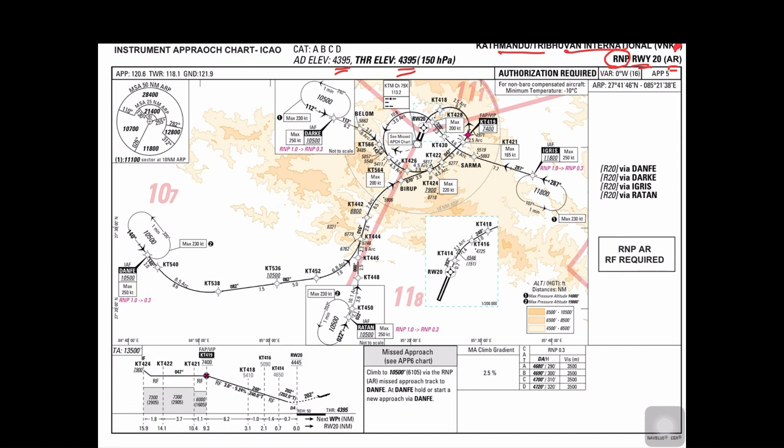This is the information section, and this is how you present the information section of your plate. Next is the frequency section: Approach 120.6, Tower 118.1, Ground 121.9. This is how you present the frequency section.